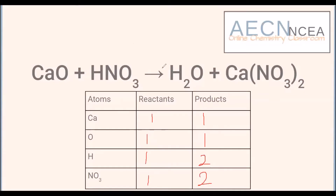We'll start with hydrogen. We have two on the product side, so we need two on the reactant side. We can't add a subscript — we have to put a two in front of the entire compound. So we need two hydrogens, and that also gives us two nitrates. Now looking at our table, everything is balanced. Just by putting that one two in front, we now have the same number of each atom on both sides. In real life: for every one calcium oxide, two nitric acids react to form one water molecule and one calcium nitrate.